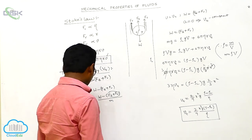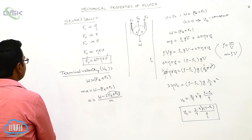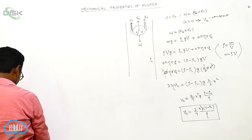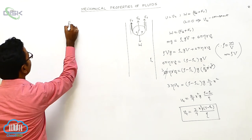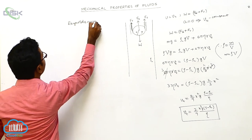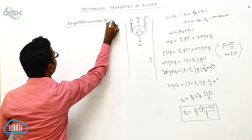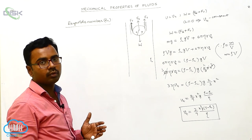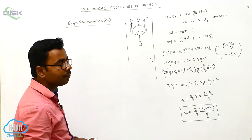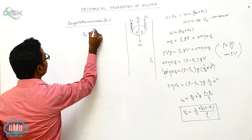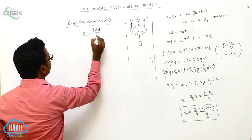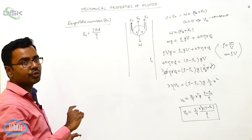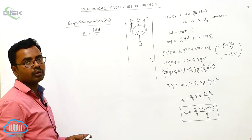Now we discuss Reynolds number. Using the value of Reynolds number we can identify the type of fluid flow — whether it is turbulent flow, steady flow, or transitioning between the two. The Reynolds number is given by: Rn = rho·V·d / eta, where rho is the density of the fluid, V is the velocity, d is the diameter of the tube, and eta is the coefficient of viscosity.